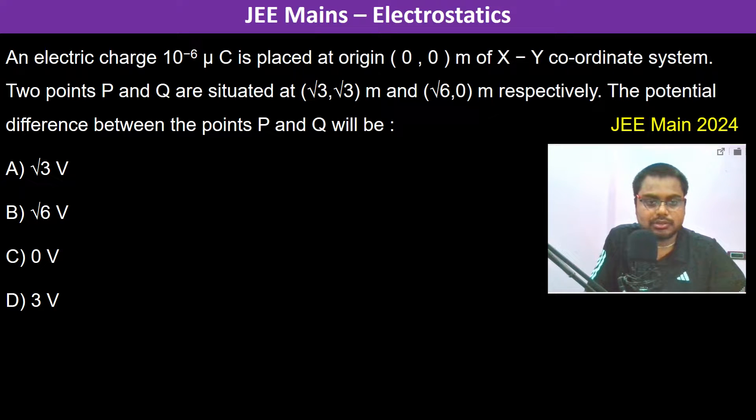An electric charge 10 to the power minus 6 microcoulombs is placed at origin. So this is the origin and here the charge q is placed which is 10 to the power minus 6 microcoulombs. The points P and Q are situated at, so this is point P which is root 3 comma root 3.